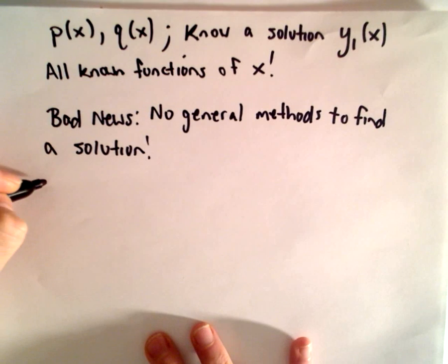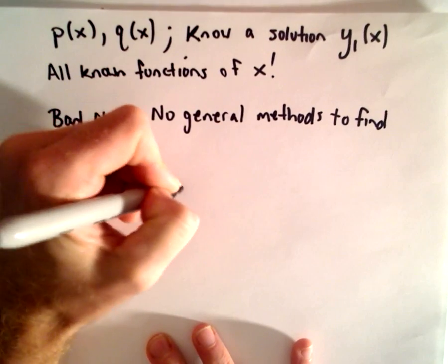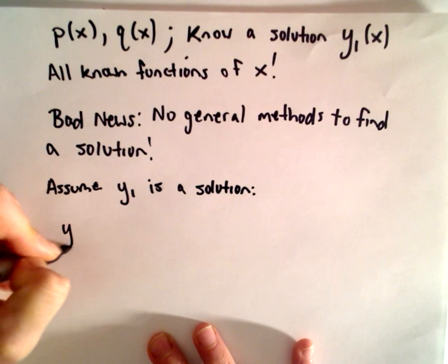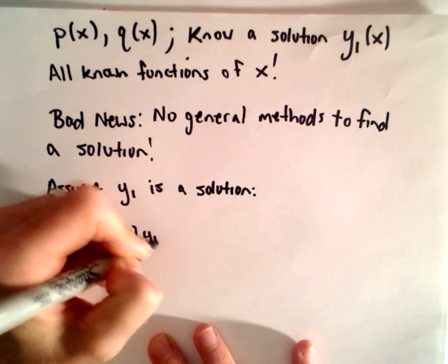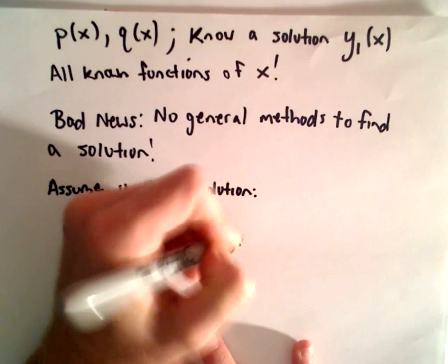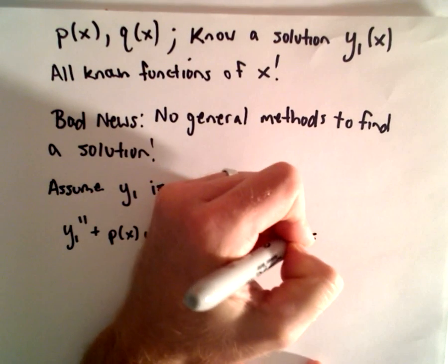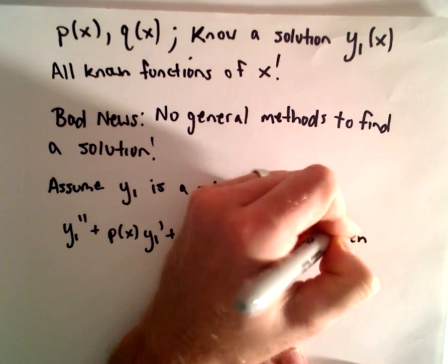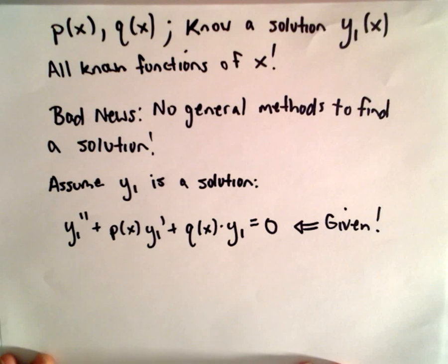So let's start off here. We assume that y1 is a solution. If it's a solution, that tells us simply that y1 double prime plus p of x times y sub one prime plus q of x times y sub one equals zero. So that's what we're given — we're assuming that we have a solution.